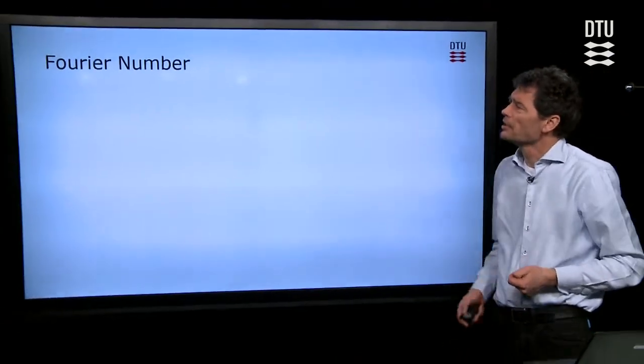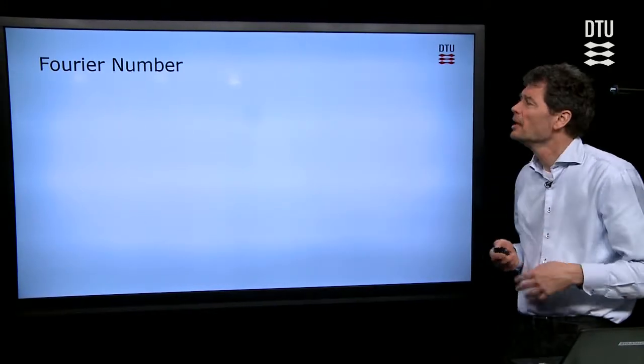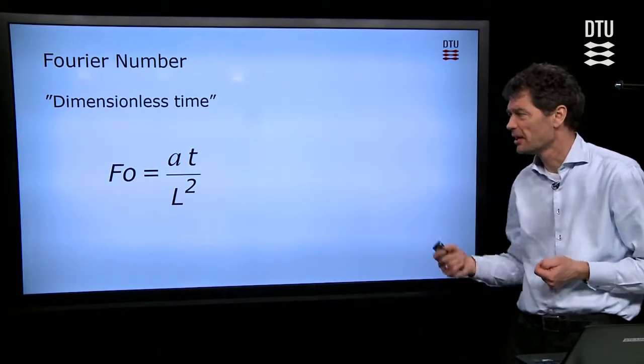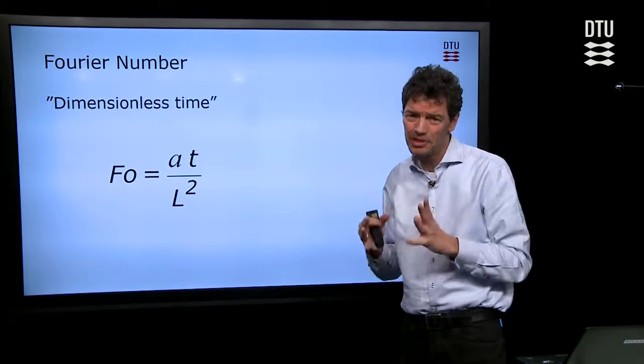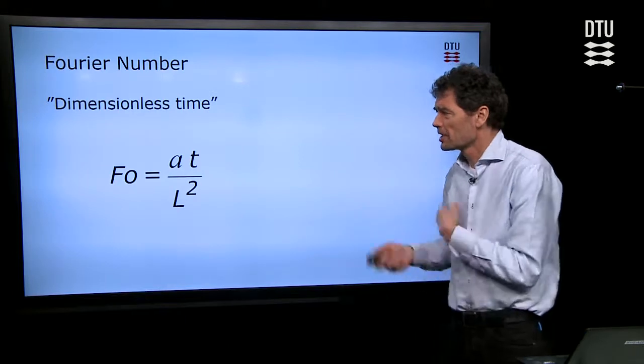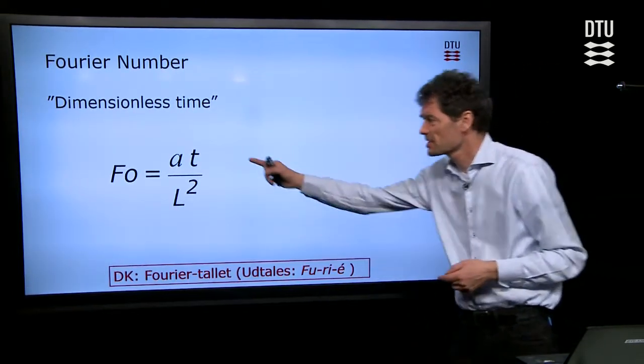The next number we need to know about is the Fourier number. Fourier is just another, but dimensionless, way to represent time. So time t, we multiply with the thermal diffusivity characteristic for our material and divide that by the characteristic length squared. All units will vanish, so we have a dimensionless number representing time.